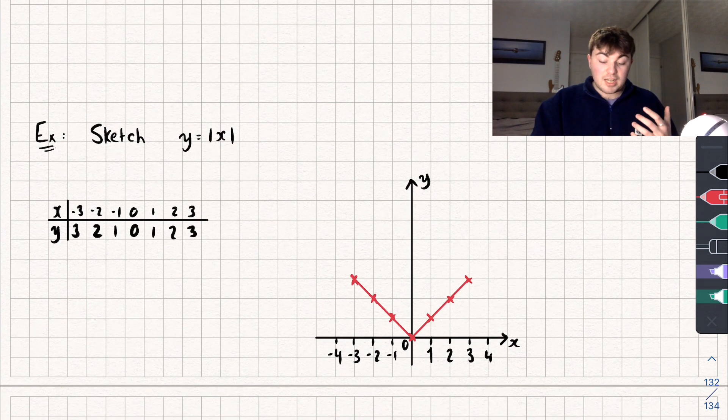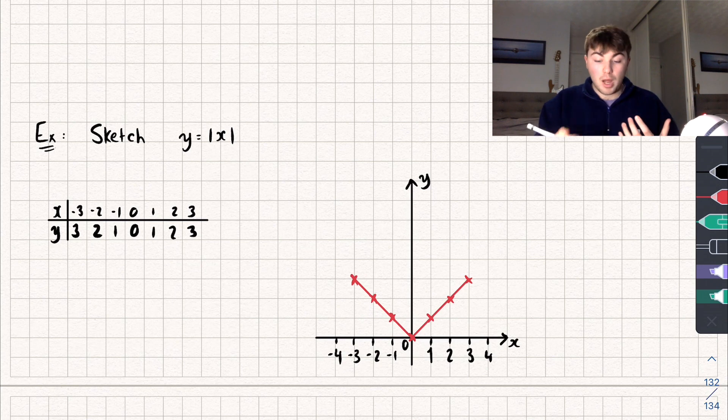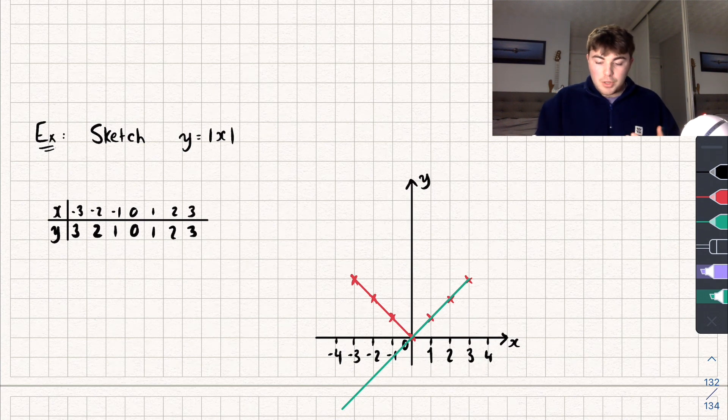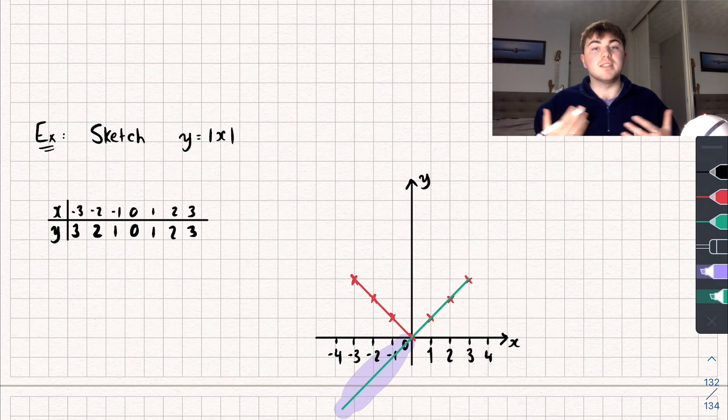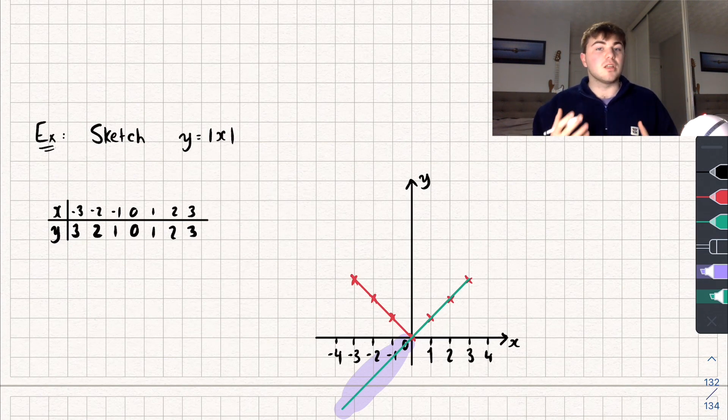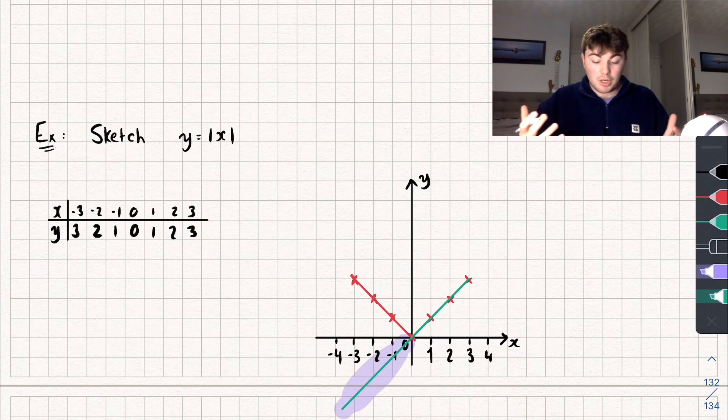So let's think what's actually happening. If I sketch the graph of y equals x, and I'll do this in green, it would look something like this. But you can see that any part of my graph that was below the x-axis, so this part here, was actually reflected in the x-axis and it became positive. Again that's what created that V shape. And so hopefully you can start to think about maybe what's going to happen when we take the modulus of a function. Well any negative part is going to be flipped in the x-axis and become positive.